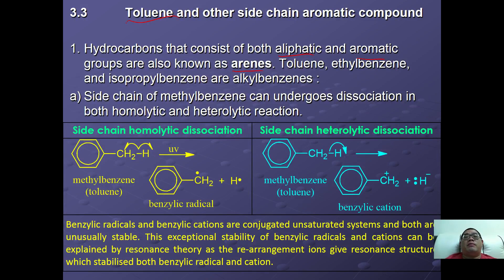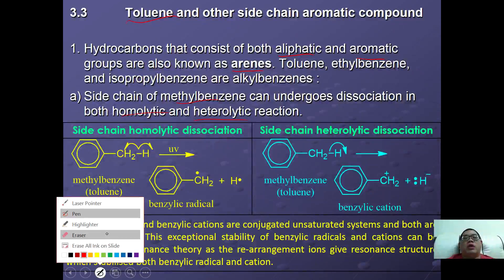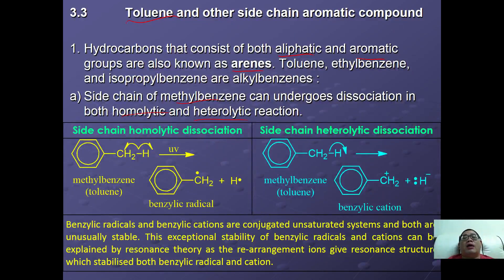In this case, we are going to study specifically about toluene. The side chain of toluene can undergo two types of dissociation: homolytic dissociation and heterolytic dissociation. The difference between these two lies in how they break. In homolytic dissociation, ultraviolet radiation is used as the radiation source.